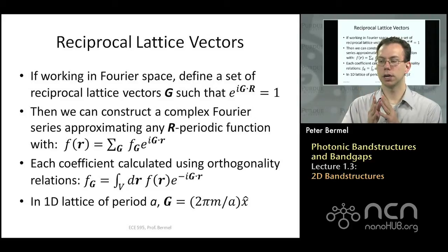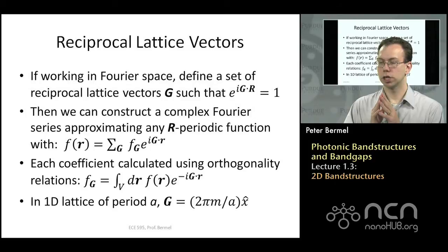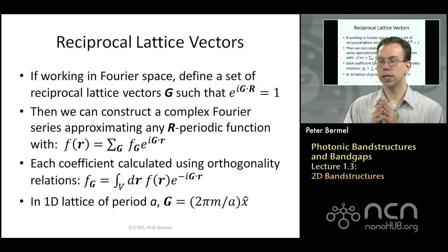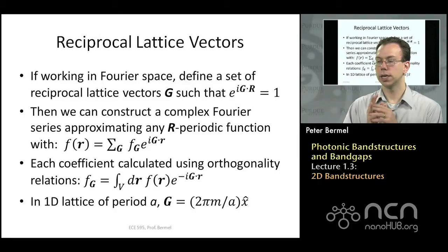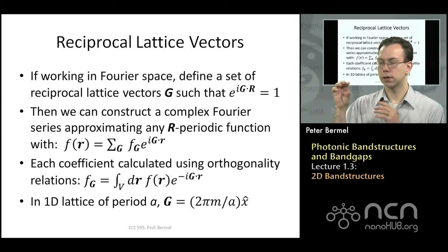If we know the r values, then we also know what the g values are directly. For a 1D lattice of period a, g would be equal to 2πm divided by a. More generally, we can construct a whole set of periodic functions f(r) consisting of e to the i·g·r times f(g), which is our 2D or 3D version of the c_g coefficients we had earlier. We can calculate these f(g) explicitly from a real potential using orthogonality relations, by integrating the potential f(r) times e to the minus i·g·r over a unit cell of the system.